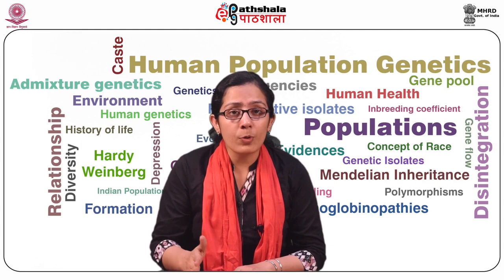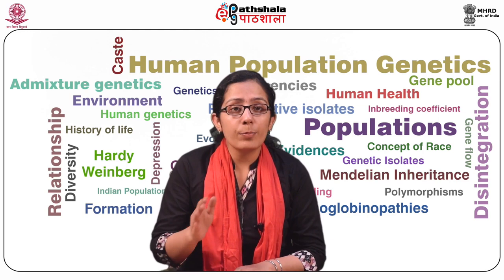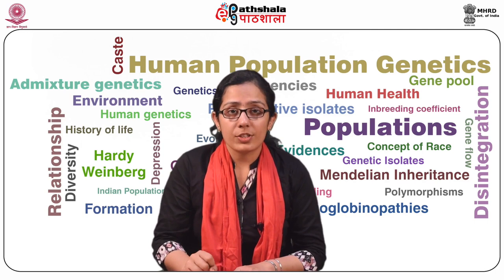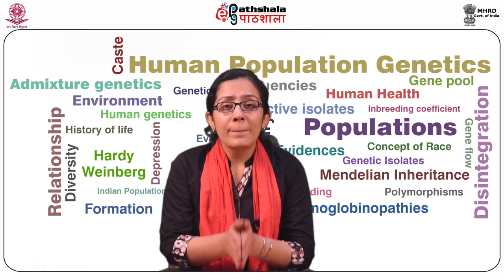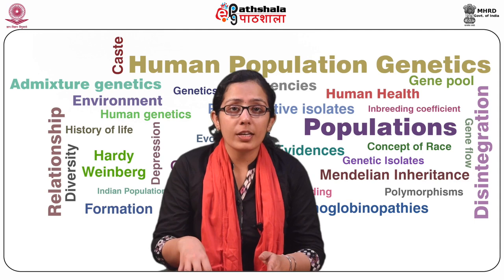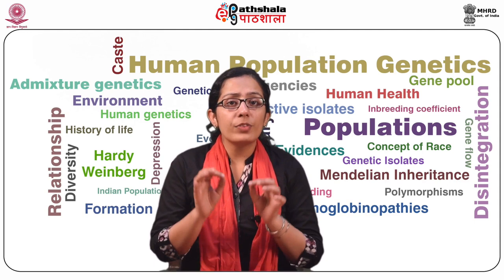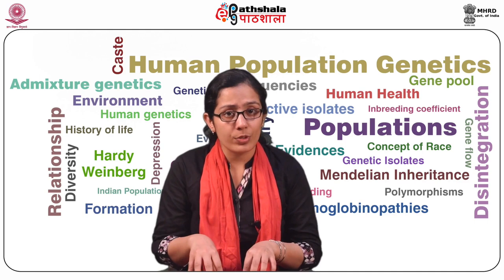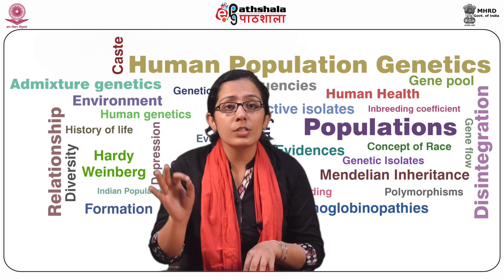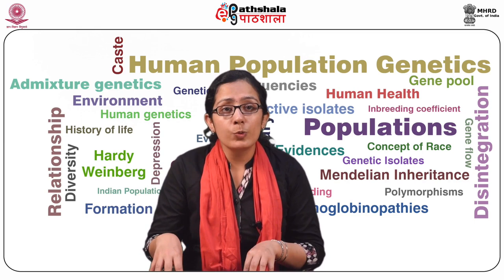The Indian subcontinent is a natural genetic laboratory. The genetic landscape of India is a result of the peopling of the subcontinent by various waves of migration, several indigenous groups and their interactions. The geographic position makes it a possible corridor for the early dispersal of modern humans, which began from Africa about 100,000 years ago. The exact date of arrival in India is still disputed, though traces of first modern humans in Eurasia were observed around 30,000 to 50,000 BP.